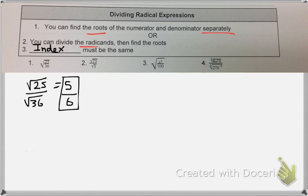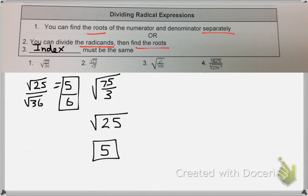But you can also divide the radicands first and then find the roots. So, meaning you can divide the numbers on the inside first. So if you look at number 2, square root of 75, that's not something that gives you a whole number. Square root of 3, that's not something that gives you a whole number. Let's try dividing first. 75 divided by 3 is 25. Now we have something that we know the answer to already. Square root of 25 is just 5.